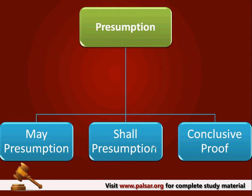Under Shall Presumption, it is also the duty of the court to shift the burden on the party who is disputing the conclusion to produce evidence. If that party produces adequate evidence, the court shall change its opinion and act against the presumption fixed under law. When it comes to Conclusive Proof, once one fact is declared or deemed to be proven of the other fact also, the court has no option except to conclude that the other non-proved fact is also deemed to have been proved, and no evidence shall be allowed to rebut it.